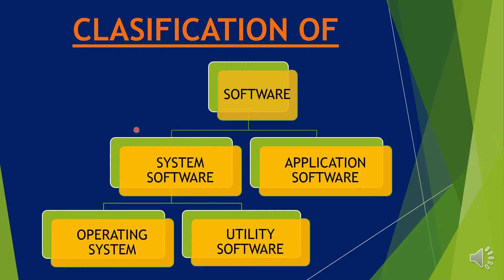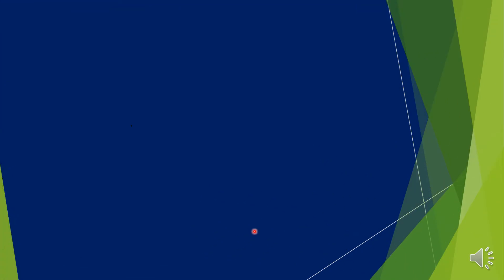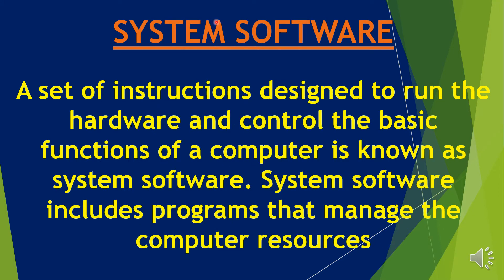System Software is of two types: Operating System and Utility Software. A set of instructions designed to run the hardware and control the basic functions of a computer is known as System Software. System Software includes programs that manage the computer resources.